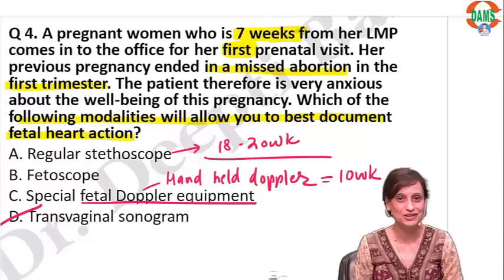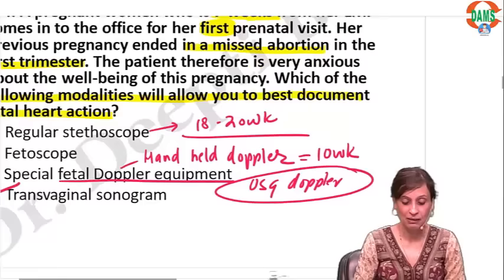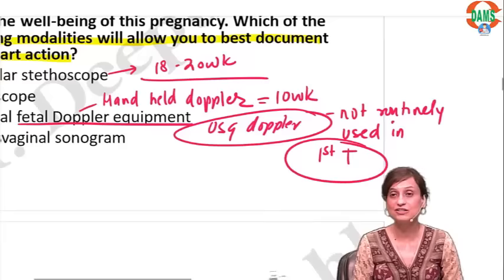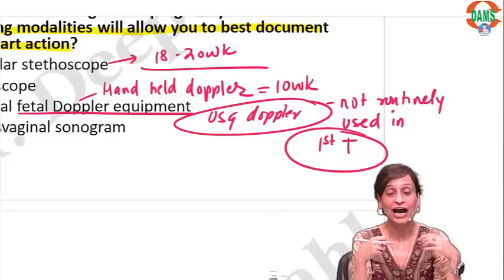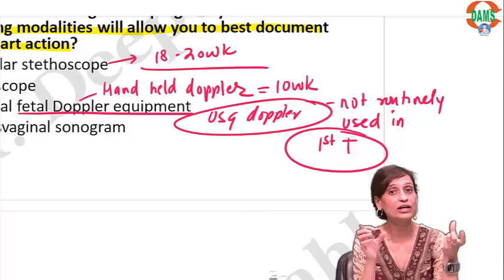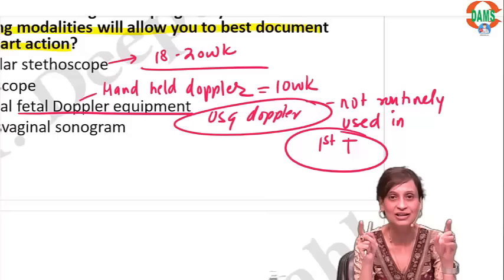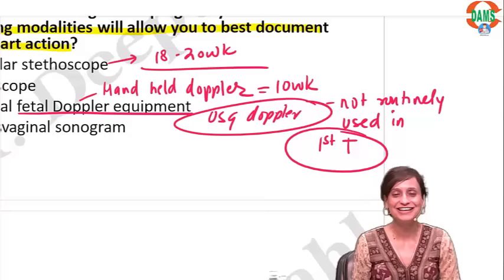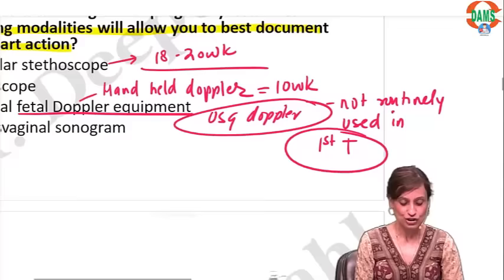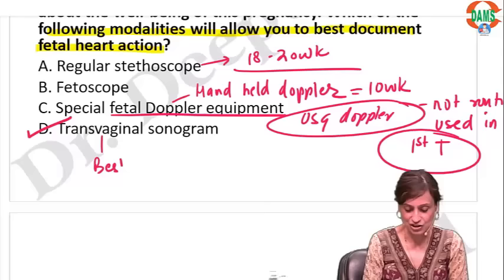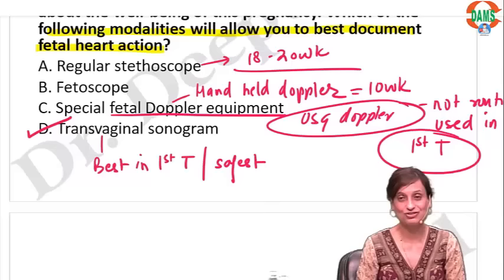What about ultrasound Doppler? Ultrasound Doppler is not routinely used in the first trimester because Doppler generates heat, and hyperthermia is not good for the embryo during organogenesis — extreme heat can be teratogenic. So Doppler ultrasound is not routinely used in the first trimester. The best and safest option in the first trimester is transvaginal ultrasound.